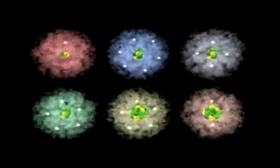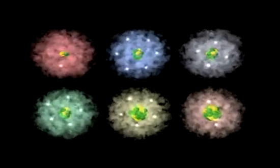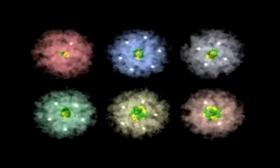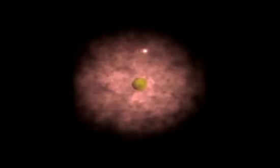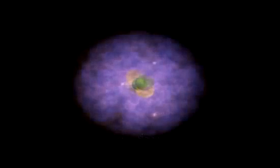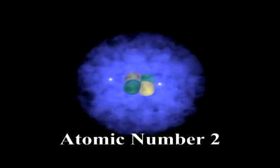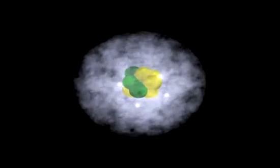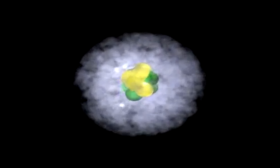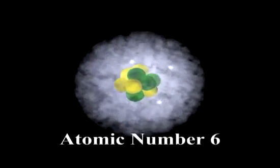Every element has a unique atomic number. The atomic number of an element corresponds to the number of protons found in the nuclei of its atoms. For example, hydrogen atoms have one proton and an atomic number of one, helium atoms have two protons and an atomic number of two, while carbon atoms, which form the atomic skeleton of all the larger molecules found in living organisms, have six protons in their nucleus, giving them an atomic number of six.